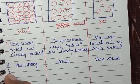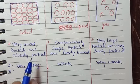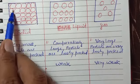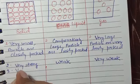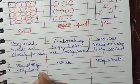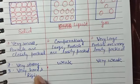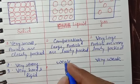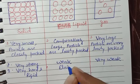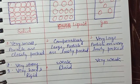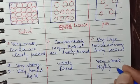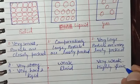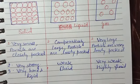Looking at the nature of these states: solids are very hard and rigid because inter-particles are very close and closely packed. Liquids are fluid — things can flow in them; they have fluidity. Gases are highly fluid — their fluidity is very high, meaning they have the property of flow.